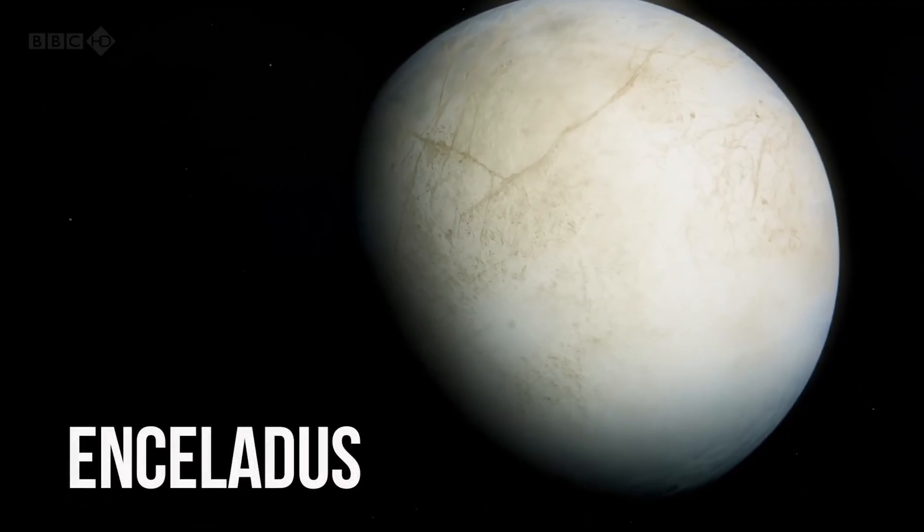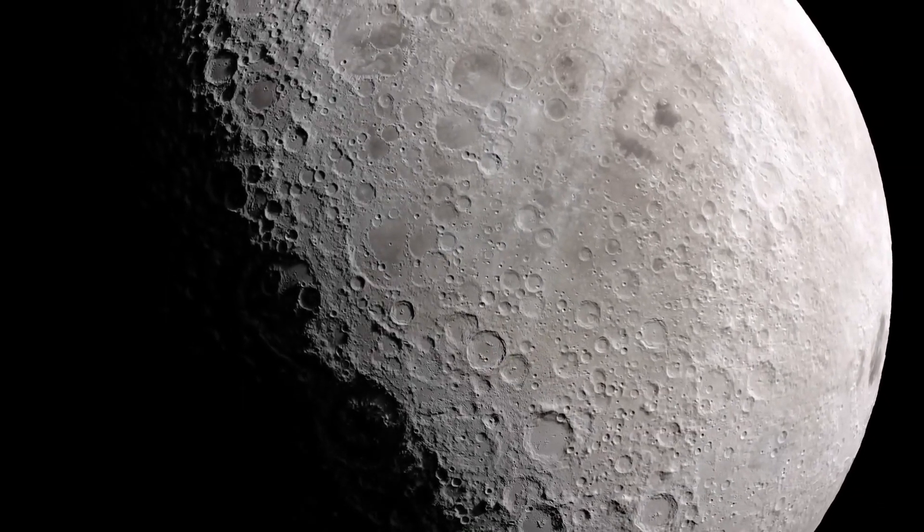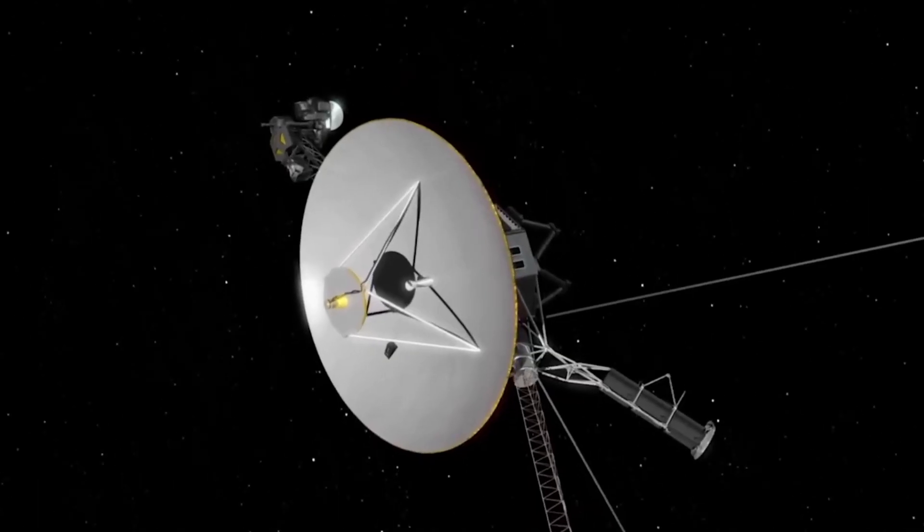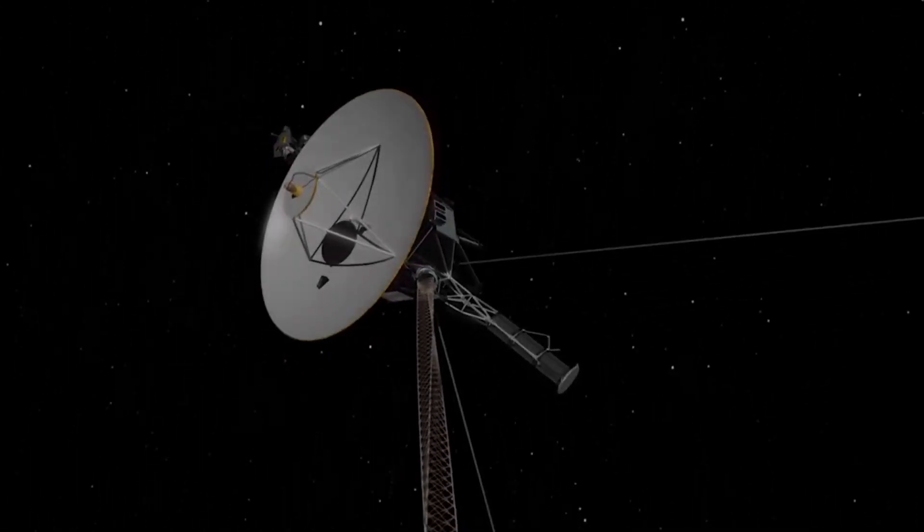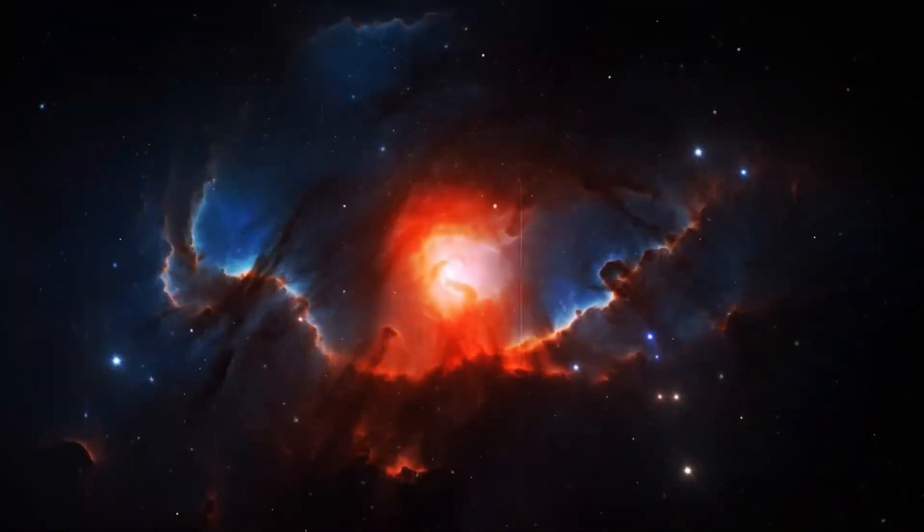What are now the most remote outposts of humanity had actually only been launched to gather new insights into the outer planets of the solar system, which had been little explored until then. But after the probes examined Jupiter, Saturn, Uranus and Neptune, NASA decided to extend their mission and finally send them to the edge of our home world.